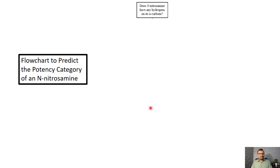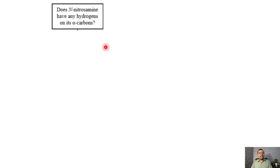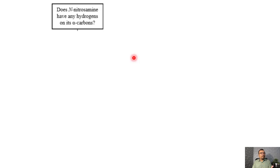The first question to ask is: does your nitrosamine have any hydrogen on its alpha carbon? The alpha carbon is the carbon just adjacent to the nitrogen. As discussed in the last video, the presence of hydrogen on the alpha carbon increases the carcinogenic potency of the nitrosamine. So we first need to determine whether a hydrogen is present on the alpha carbon.